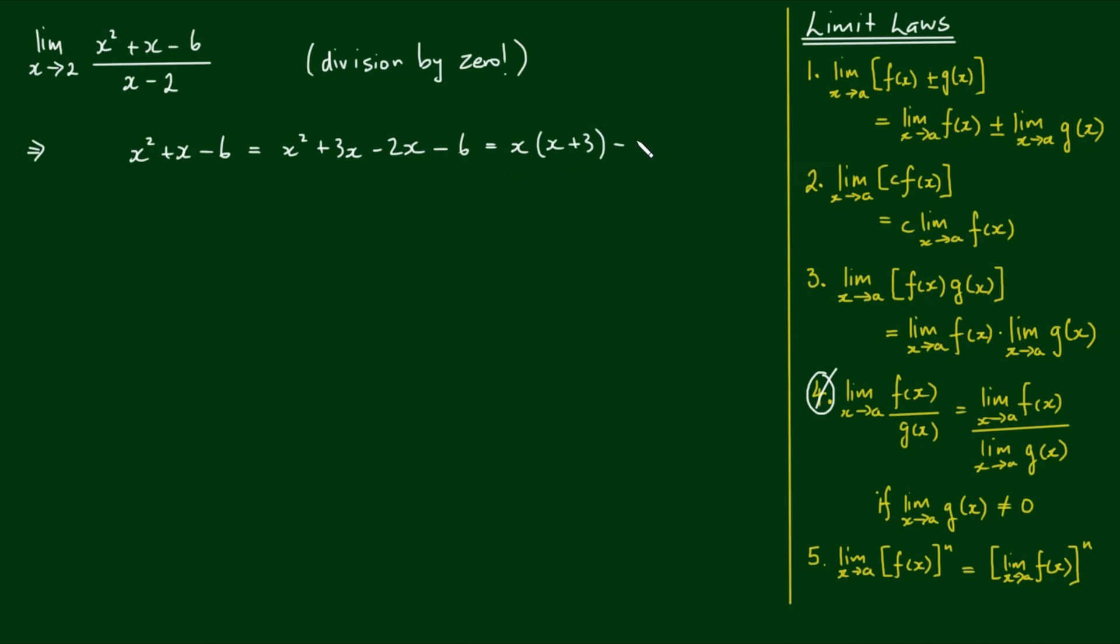And I can factor out a minus 2 here in the final two terms, leaving me with negative 2 outside of x plus 3. So this factorizes to x minus 2 by x plus 3. So if we now divide all of this by x minus 2, I have x minus 2 cancelling with x minus 2. So this means the limit as x approaches 2 of x squared plus x minus 6 all over x minus 2 is equal to the limit as x approaches 2 of x plus 3.